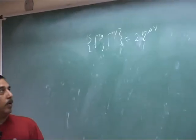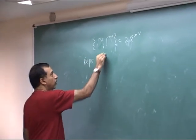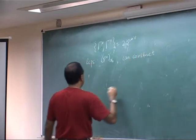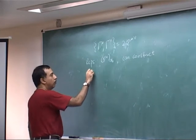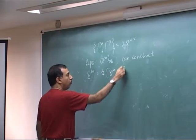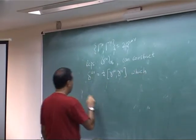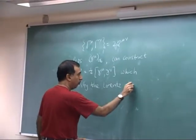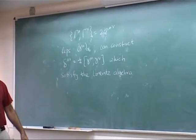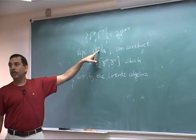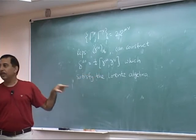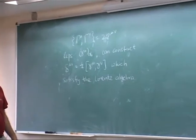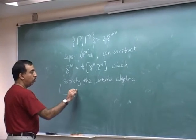Once you have representations, gamma mu, which are now matrices, we can construct representations of the Lorentz algebra. To show that, all you need to do is show that given gamma mu matrices satisfying this relation, these matrices satisfy the relation S comma S equals four terms, which is the Lorentz algebra. The representations you get in this way are called spinner representations.